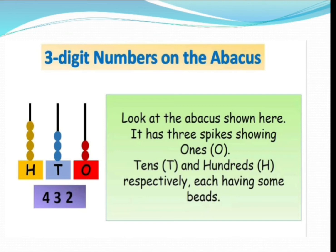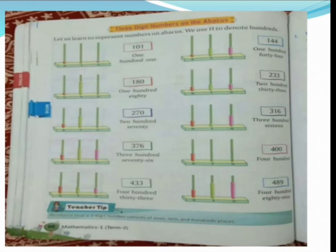So yahan, sabse pehle 100 ki rod pe dekho, kitni beads hai, 1, 2, 3, 4. 4 means 400, isliye niche 4 likha hai. Uske baad 10s ki rod pe dekho, 1, 2, 3. 3 tens. Isliye niche 3 likha hai. Ones me 2 beads hai, toh 2 likha hai. Abhi hum number kaise padhenge, 432. Konsa number hai? 432. Students, abhi, ye topic hai hamare textbook pe page number 88 pe diya hua hai. Hum aur examples karenge, thode iske.